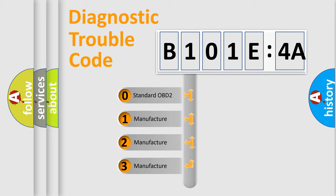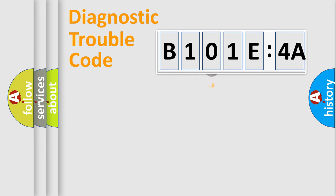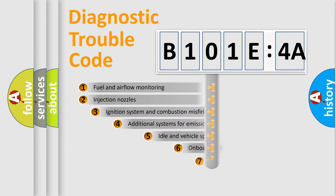If the second character is expressed as zero, it is a standardized error. In the case of numbers 1, 2, or 3, it is a manufacturer-specific expression of the car-specific error.